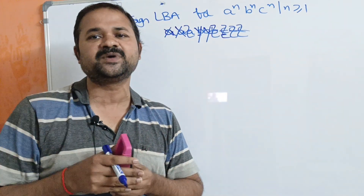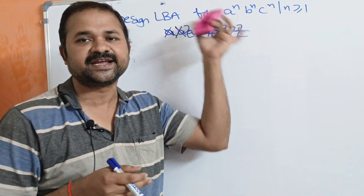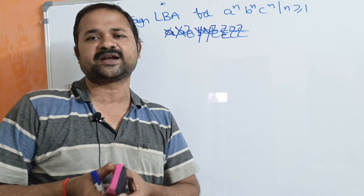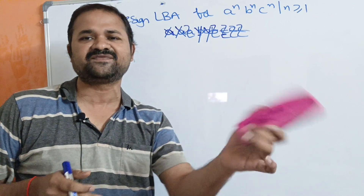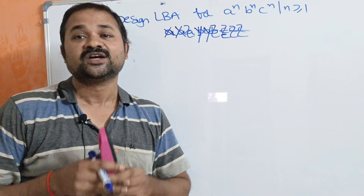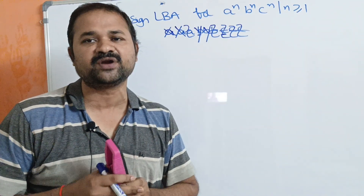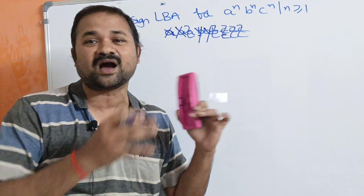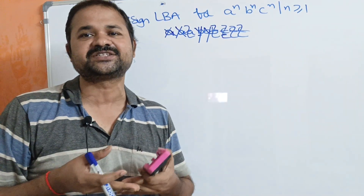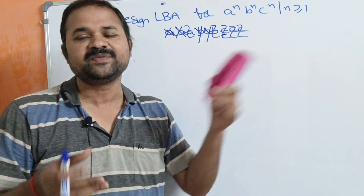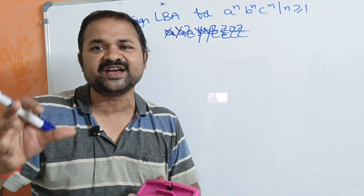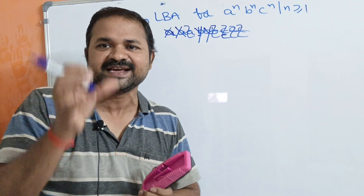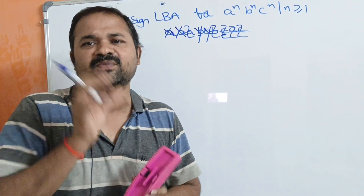In a Turing machine, the last symbol is the blank symbol. But here in linear bounded automata, the last symbol is the right-hand marker. That is the only difference. If the input is the right-hand marker, then replace it by right-hand marker and move either left or right. The difference is Turing machine is more powerful than linear bounded automata — there are some languages which can be accepted only by the Turing machine. In Turing machine, the length of the input tape is infinite. Whereas in linear bounded automata, the length of the input string is finite — it can hold only a certain number of characters.